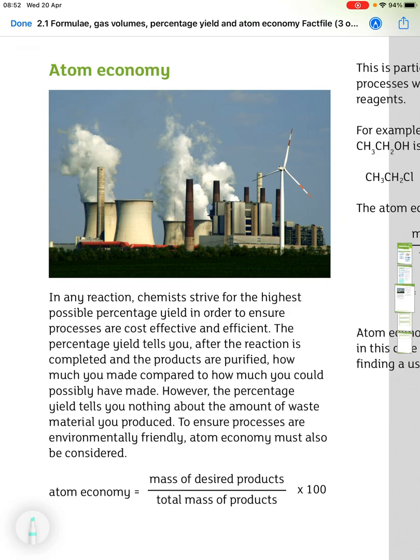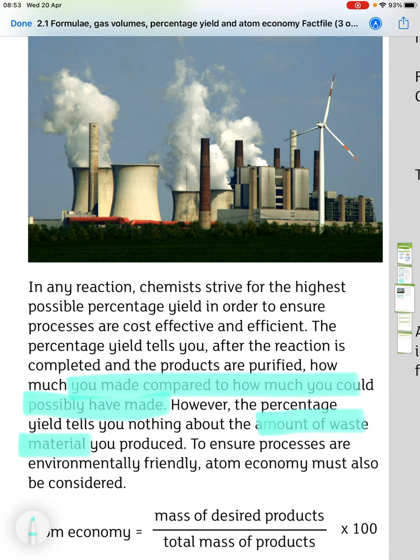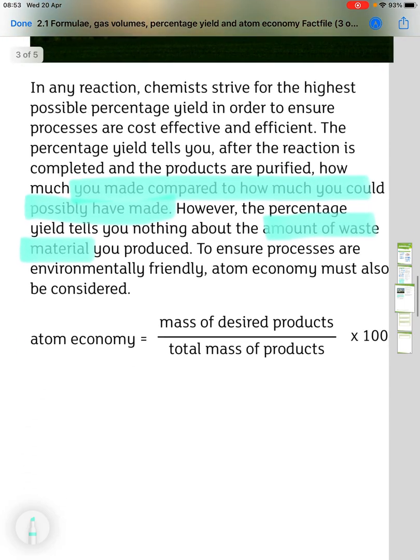And finally in this topic, atom economy. In any reaction, chemists strive for the highest possible percentage yield in order to ensure processes are cost-effective and efficient. The percentage yield tells you, after the reaction is completed and the products are purified, how much you made compared to how much you possibly could have made. However, it tells you nothing about the amount of waste material produced. So to ensure processes are environmentally friendly, atom economy must also be considered.